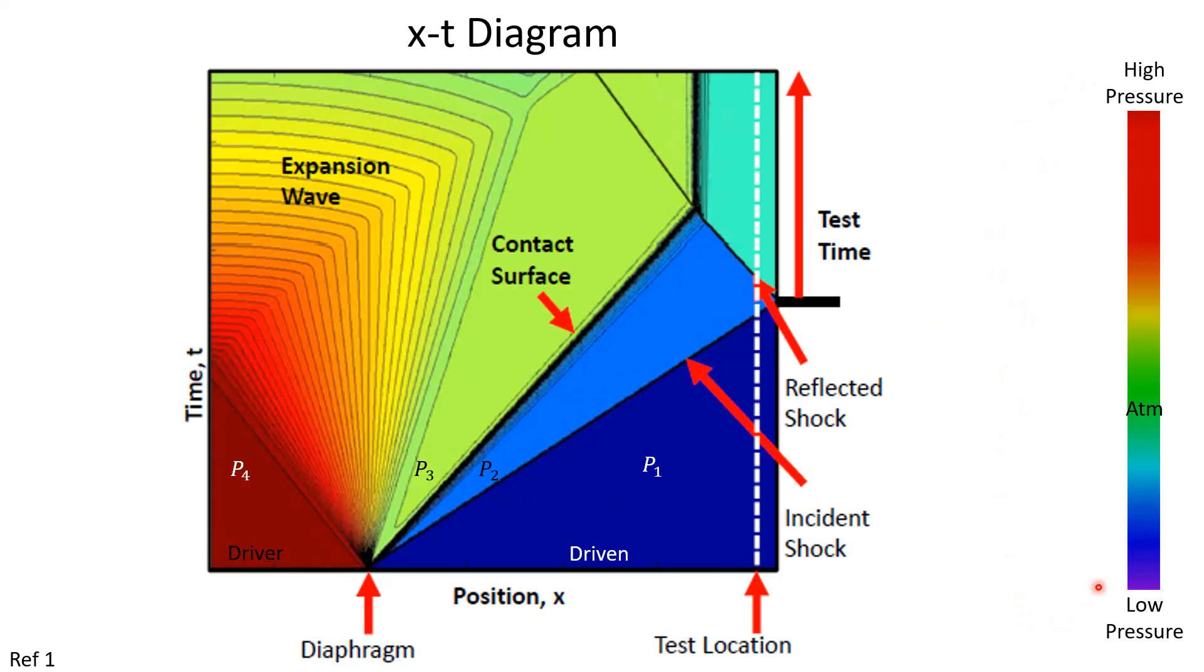Now, you could use an XT diagram to show any hydrodynamic property that you want: pressure, temperature, density, whatever you like. Here, we're going to stick to pressure because it's easy to see and it matches my color scheme already. So, you can see that this is a three-dimensional plot where the colors represent the pressure. It's called an XT diagram because the horizontal axis is the axial distance along the tube X. The vertical axis is the progression of time, T.